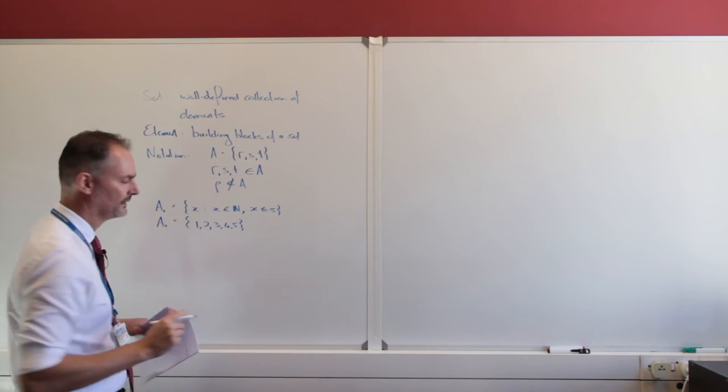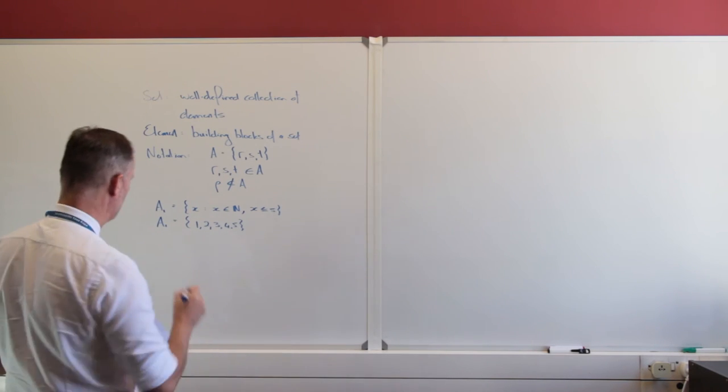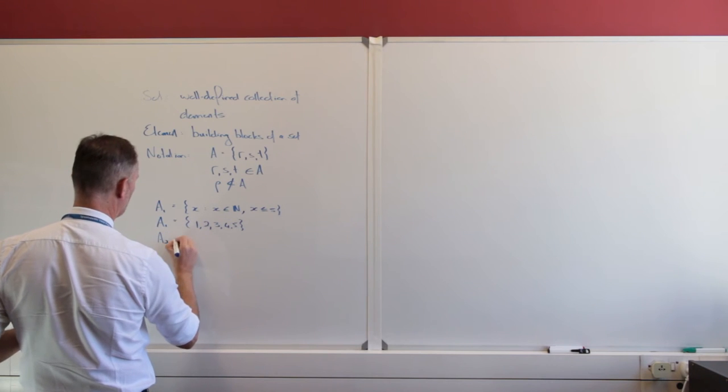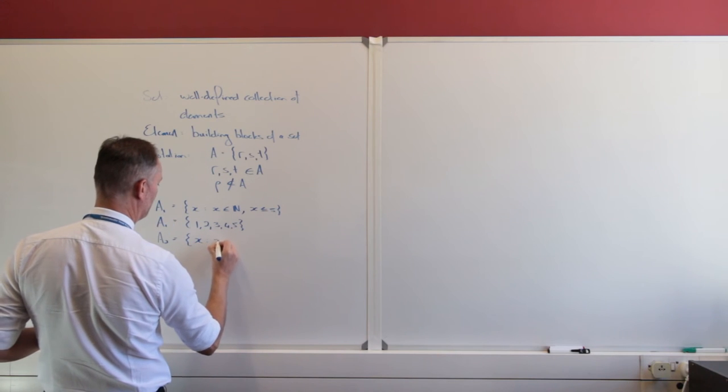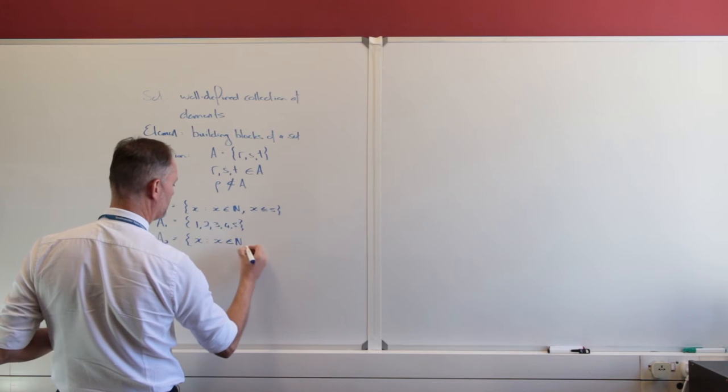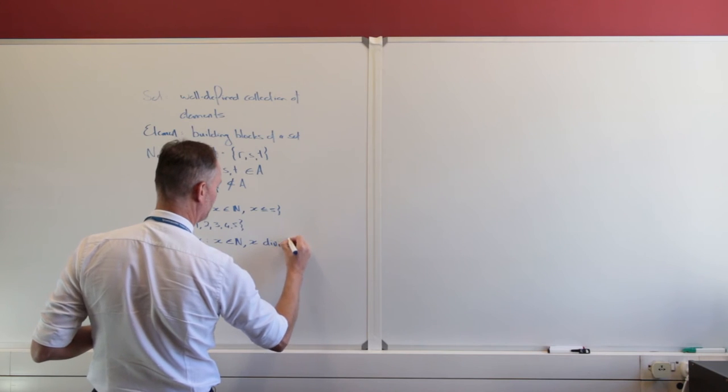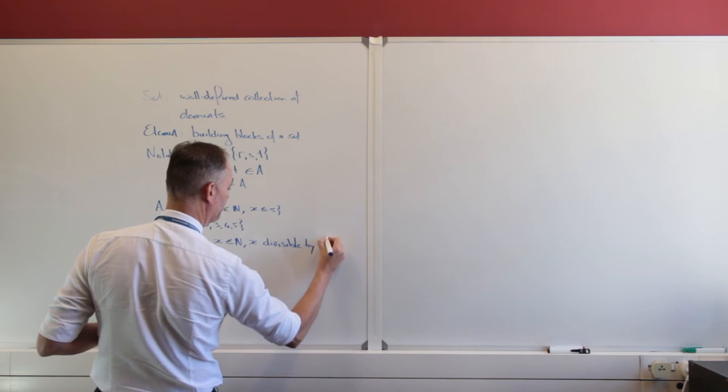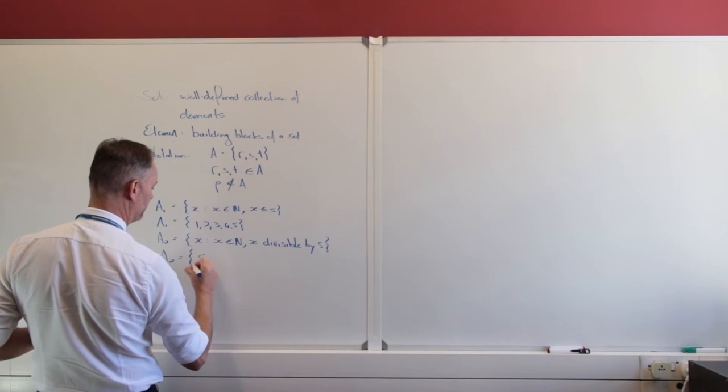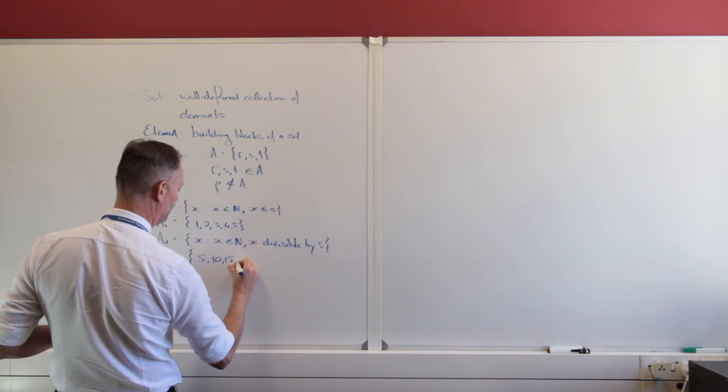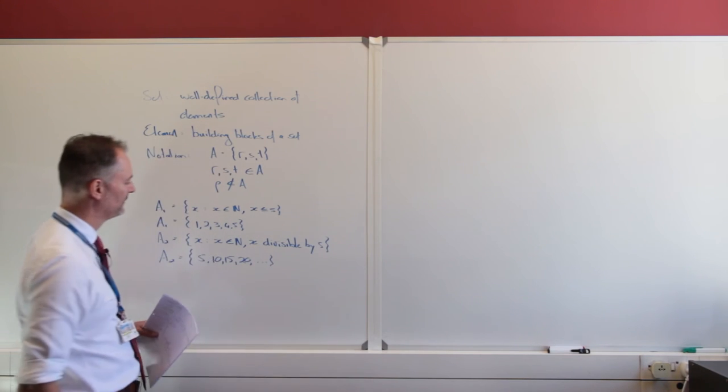Let's construct a set where we say let's take all the natural numbers divisible by 5. I'm going to call that A2. And I can write that as such: all elements of X such that X is an element of the natural numbers, and X is divisible by 5. So here really we're going to have A2 is going to equal 5, 10, 15, 20, and it goes up to infinity. And we use the dot notation for that.